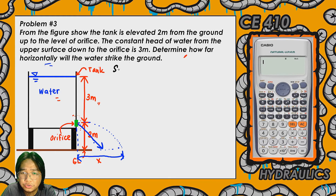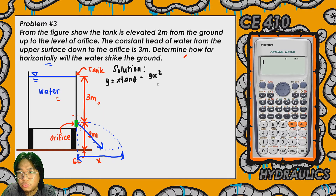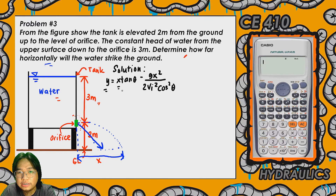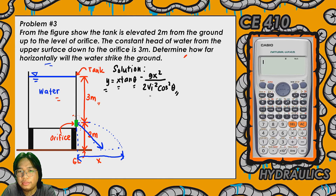Now let's go to the solution. We need to determine the value of x. From our knowledge of dynamics, we have the projectile motion formula: y = x·tan θ − (g·x²) / (2·Vi²·cos²θ). Here, y is the vertical displacement along the vertical axis, x is the horizontal displacement along the horizontal axis, θ is the angle of trajectory, and the initial velocity Vi will be determined at the orifice.